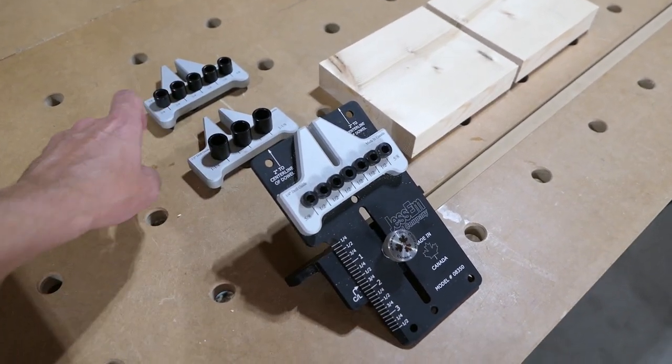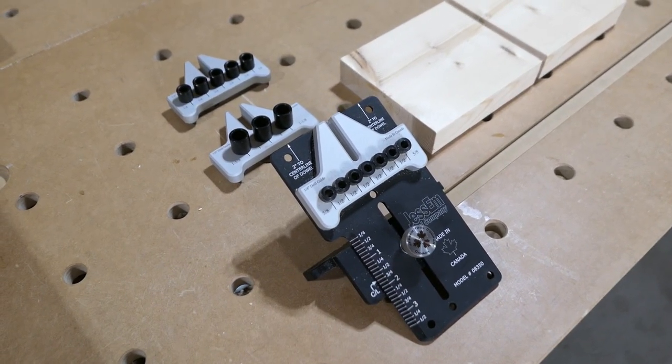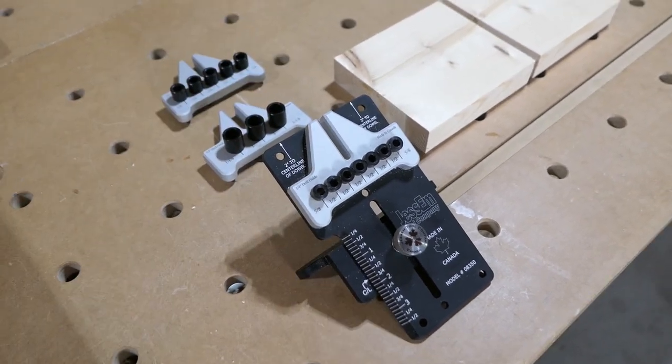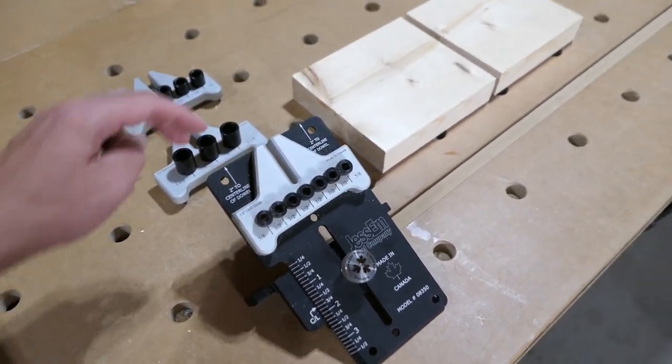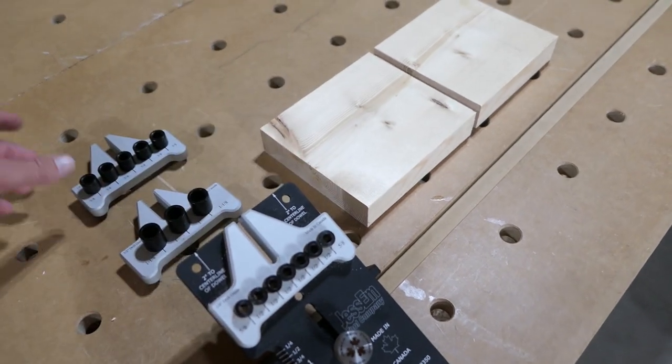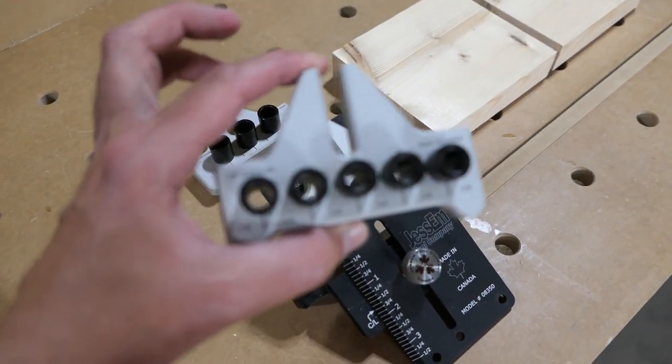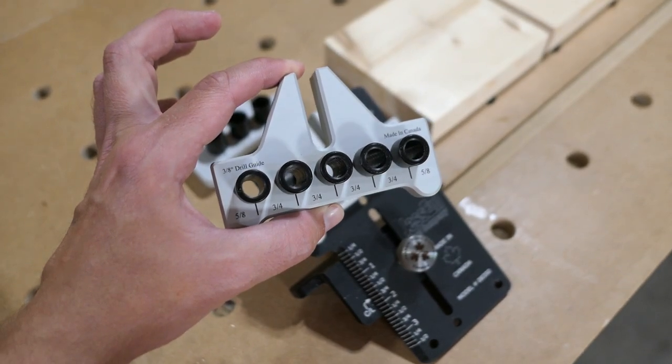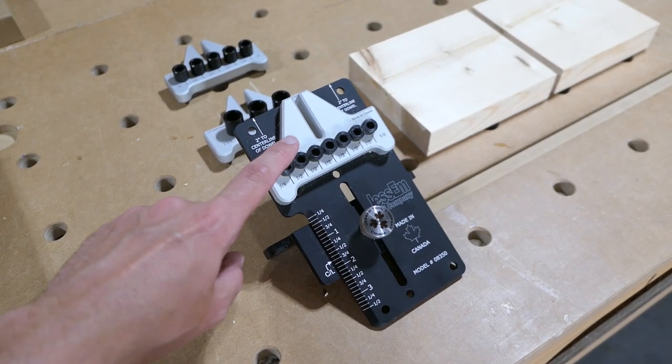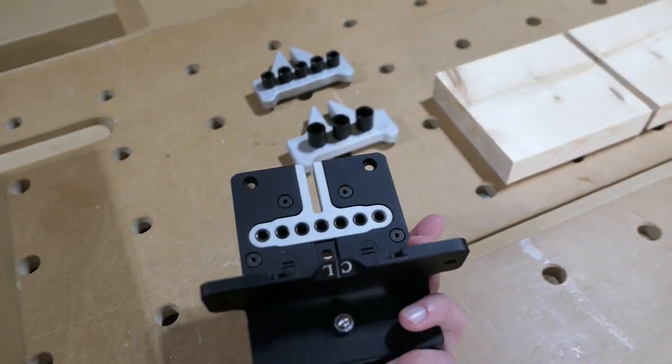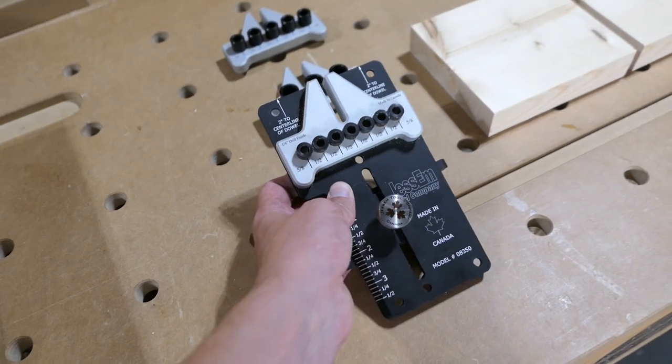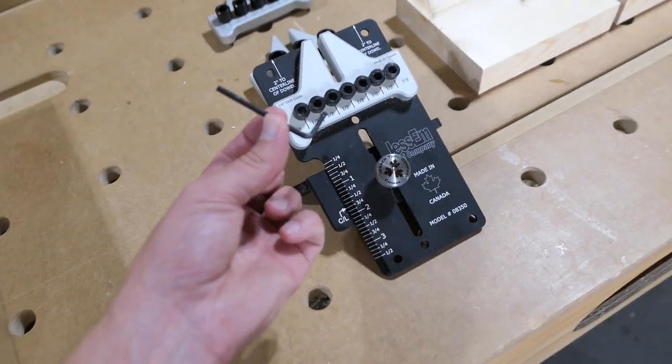The jig comes with three different guides and you have to pick based on the thickness of your material. In my case this is a 2x6 so I'll use the three-eighths guide. To replace the drill guide there are four screws on the back and they can be removed with the supplied Allen key.